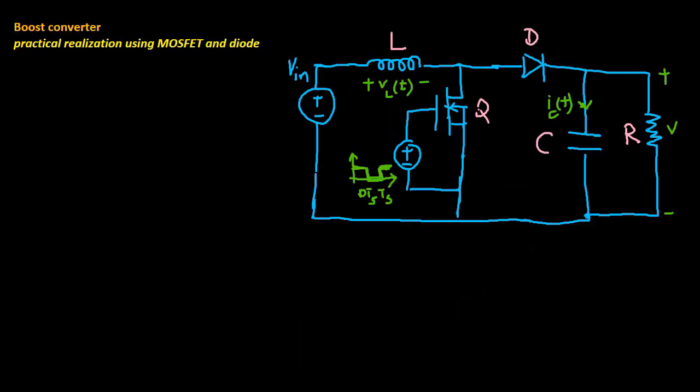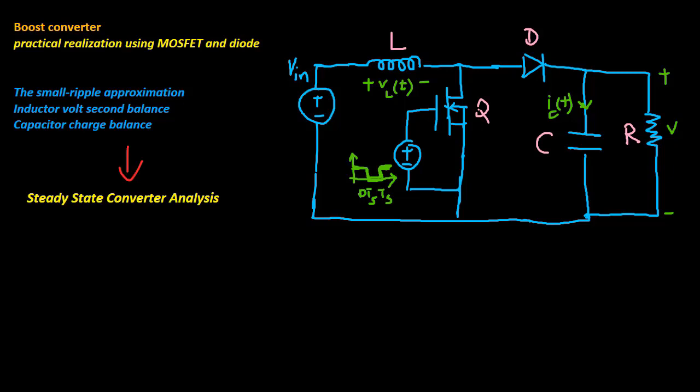Let us apply the small ripple approximation and the principles of inductor volt-second balance and capacitor charge balance from last videos to find the steady state output voltage and inductor current for this converter.